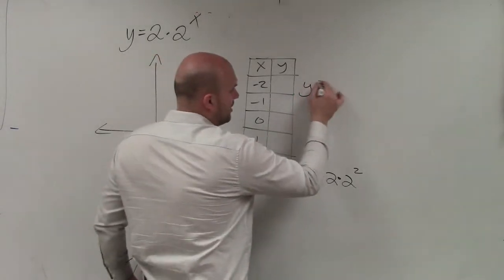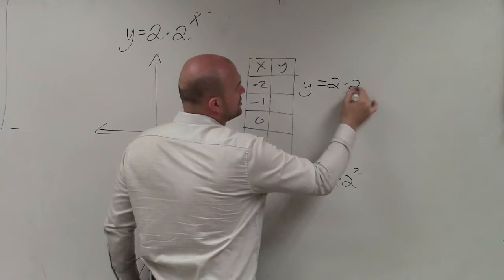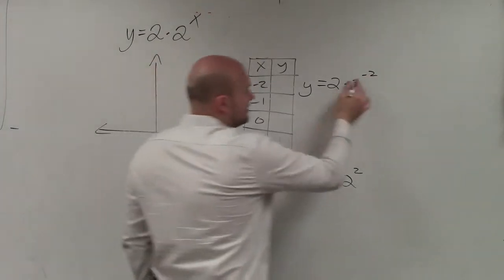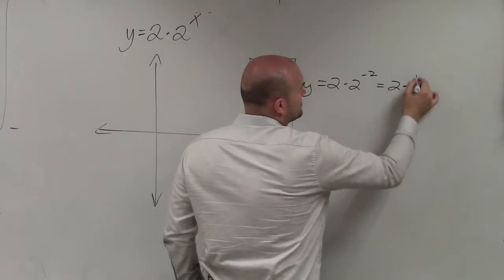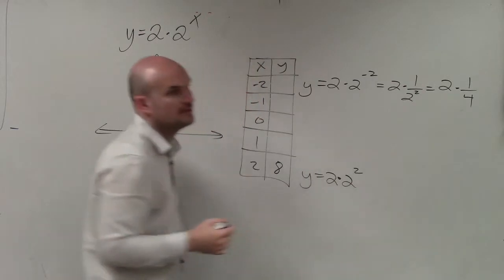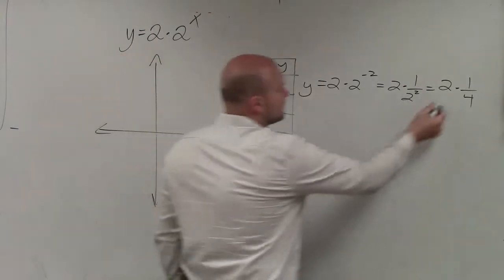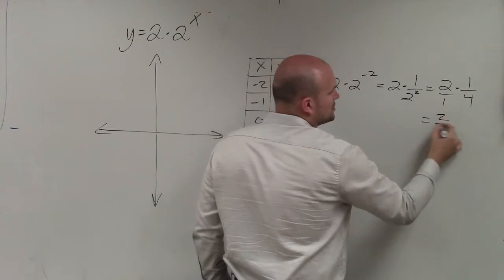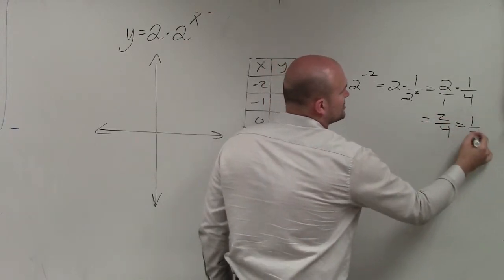Now let's do the negative. y equals 2 times 2 to the negative second. Well, we talked about this at the beginning of class. This now becomes 2 times 1 over 2 squared, which equals 2 times 1 fourth. And if you were to multiply this over, 2 over 1 times 1 fourth equals 2 over 4, which equals 1 half.